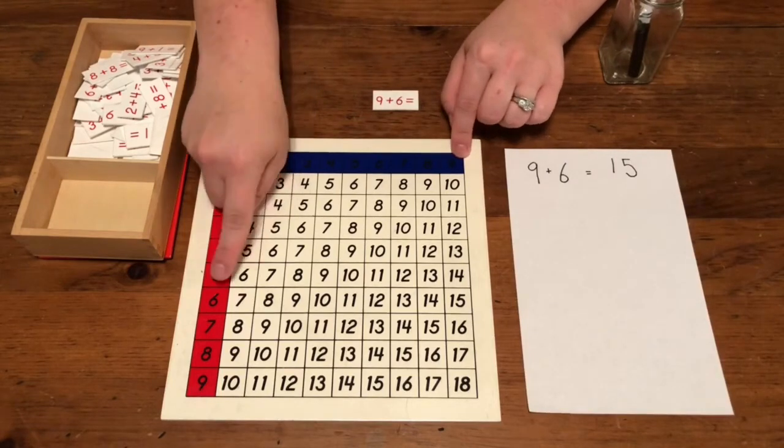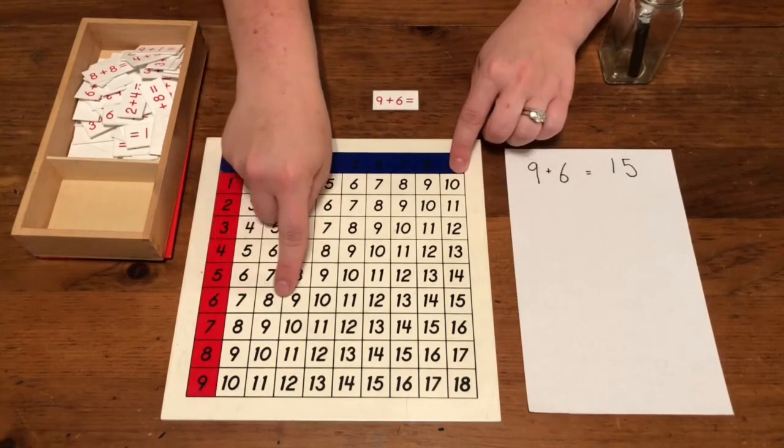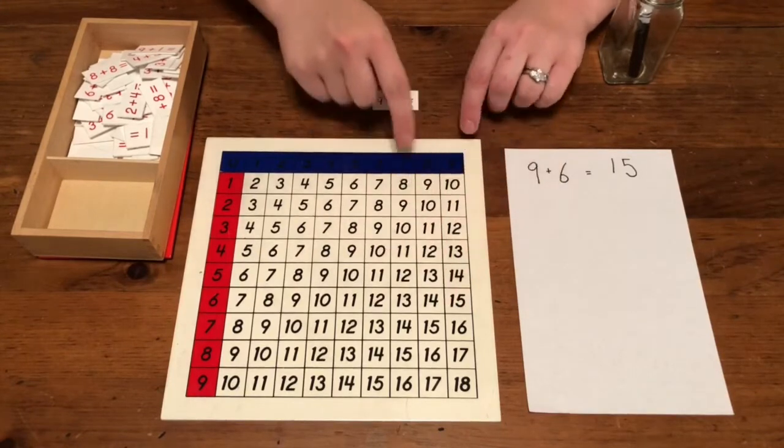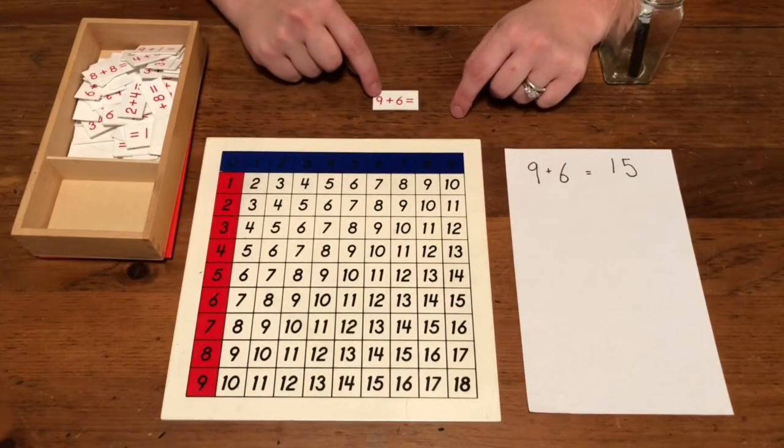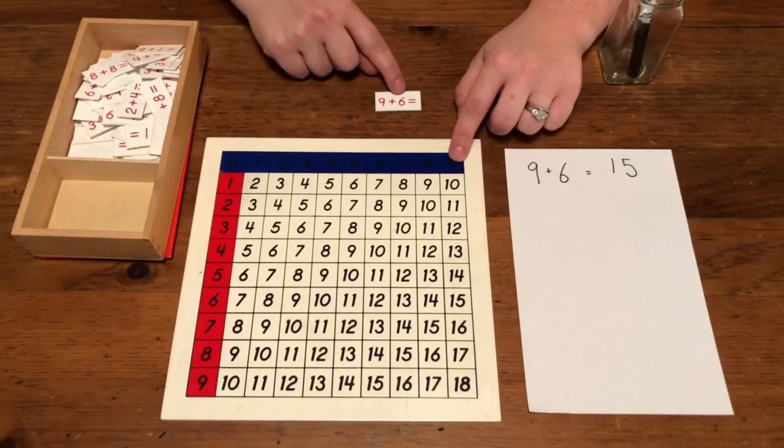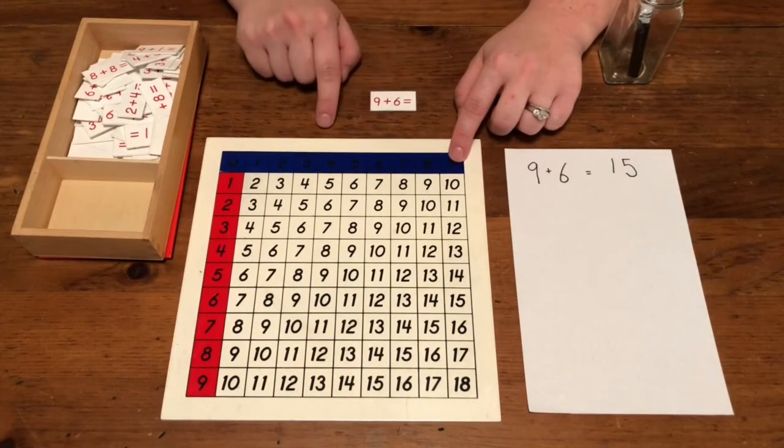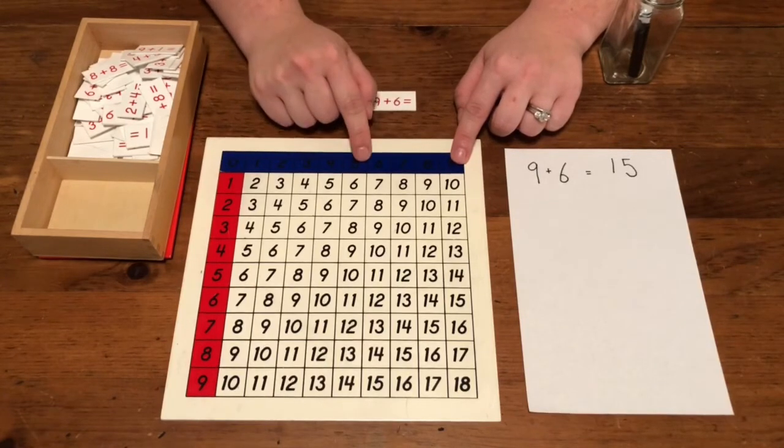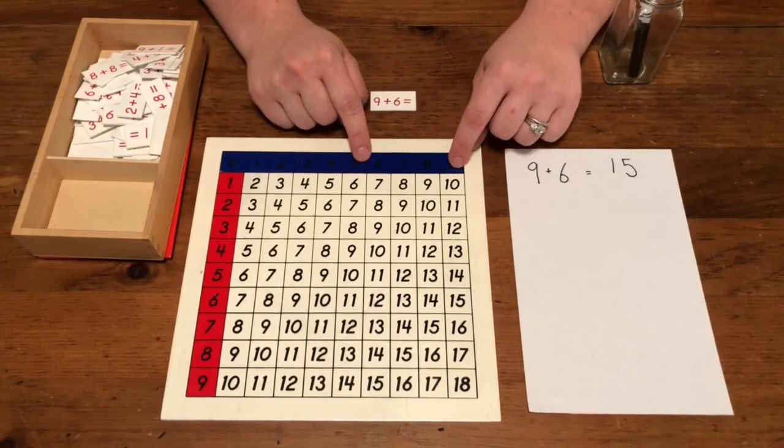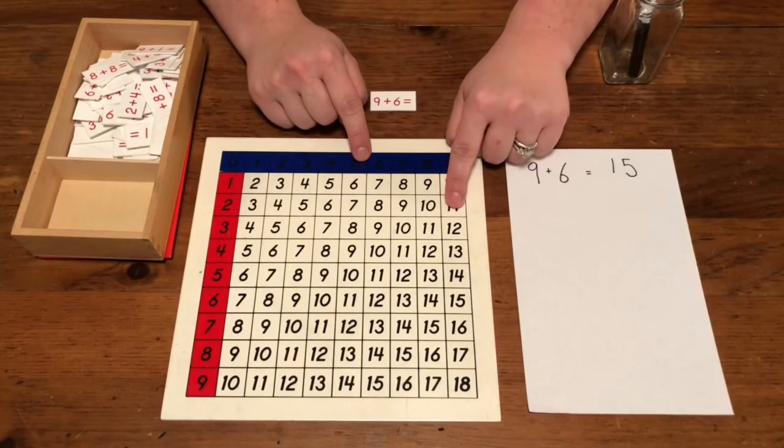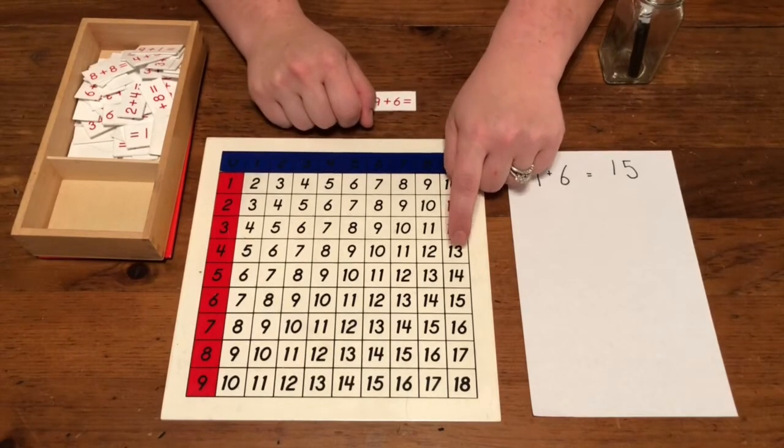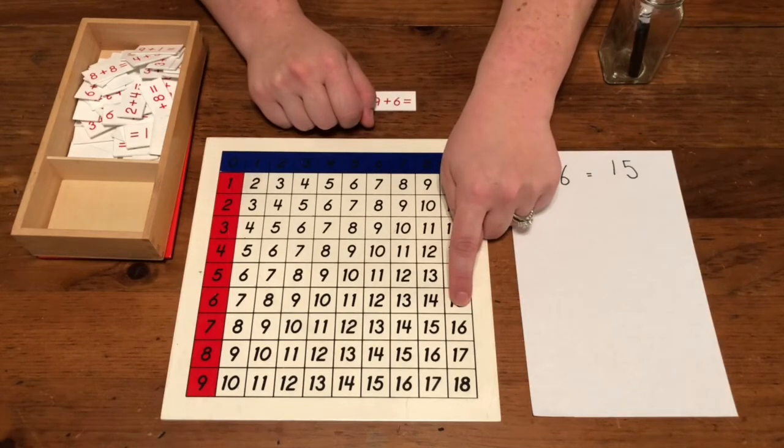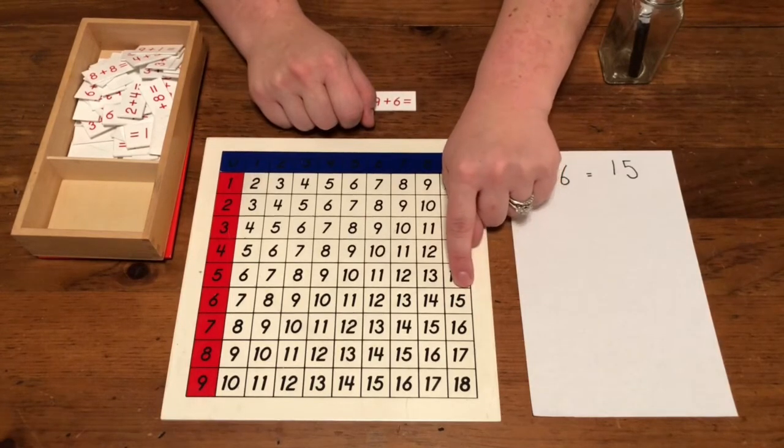Sometimes it can be a little tricky to get your fingers to meet at the right place. So what you can also do is start with your first number and then count down with the second number. So our first number is nine, and then we need to count down six more: nine plus one, plus two, plus three, plus four, plus five, plus six. And I get the same answer of 15.